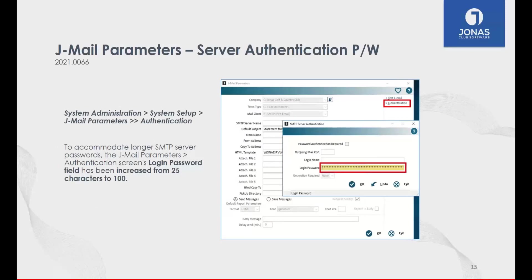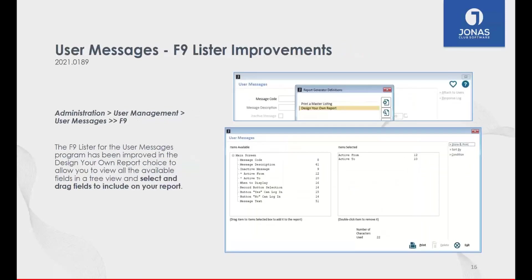Another administration enhancement is the ability to have a longer authentication password. Previously we only allowed 25 characters for a login password; we've now increased this to 100 characters, coming in line with what many email servers allow for password complexity and length. Some clubs are setting up passwords longer than 35 characters, and now the authentication options within JMail support that as well.